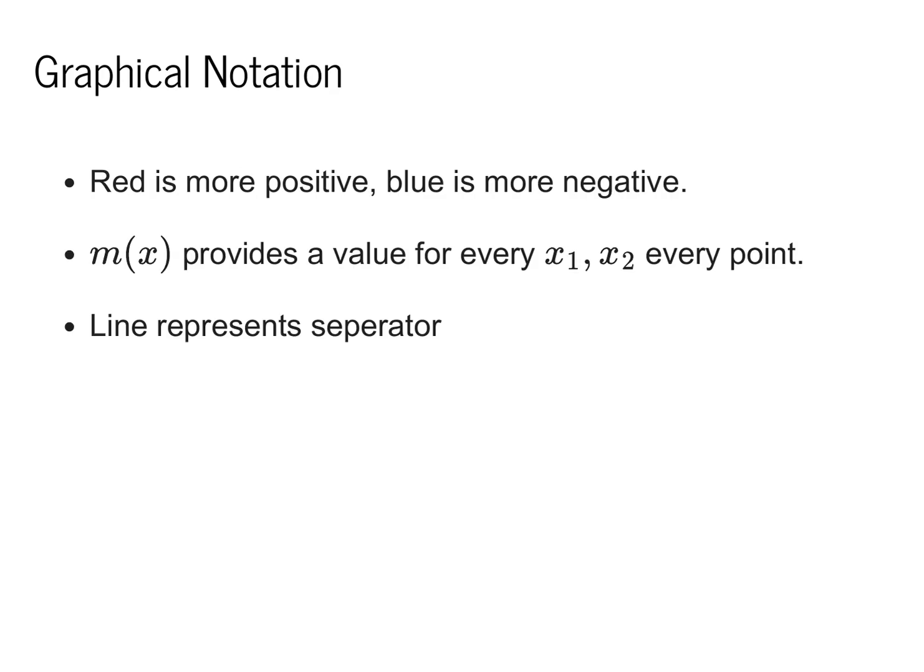We'll be using a graphical notation to represent these problems. In this graphical notation, red represents predicting positive, whereas blue represents predicting negative. While we'll be given a set of example points, known as our training data, the function m can provide a value for every possible point in two dimensions. I'll be drawing that as a colored graph, where the line in the graph represents the point where we split between classifying as red and classifying as blue.